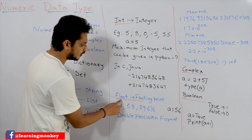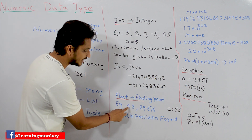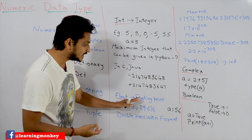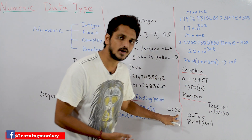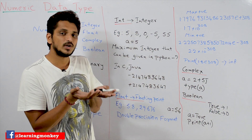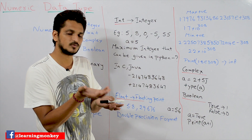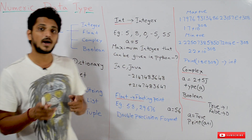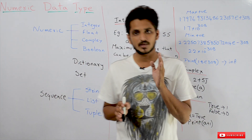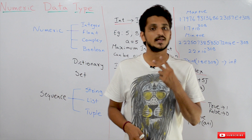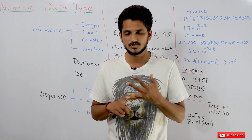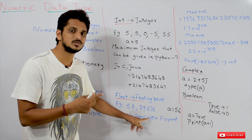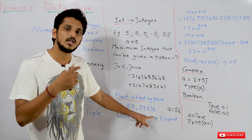Coming to the next data type — float, taken as floating point data type. For example, 5.80, 29.676 — if you have decimal point format values, we call them floating point numbers. A is equal to 5.6 is a floating point number, so A is assigned with a floating point data type. In Python, floating point numbers are represented in double precision format.